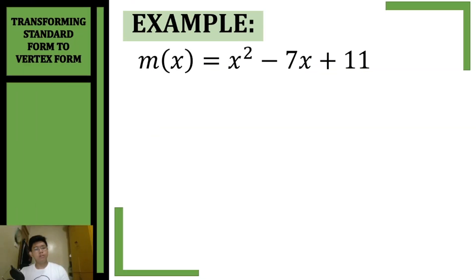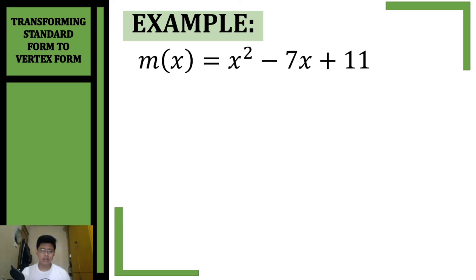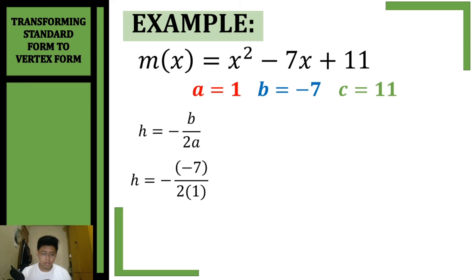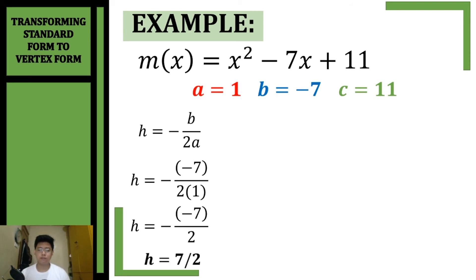Let's have another example. We're going to transform this standard form to vertex form. First, we get the values of a, b, and c: a is 1, b is negative 7, and c is 11. Using the formula negative b over 2a and substituting: negative negative 7 over 2 times 1. Simplifying — negative times negative is positive — so our x-coordinate h is 7 over 2.